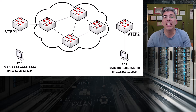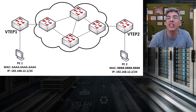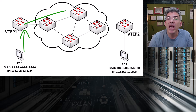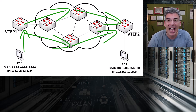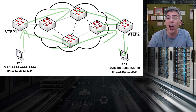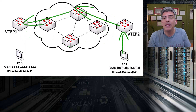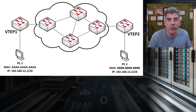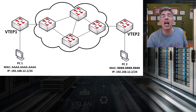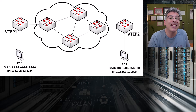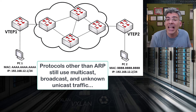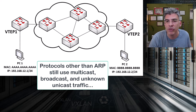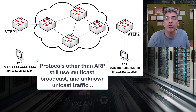An MPBGP EVPN control plane is essentially used to minimize the use of the flood and learn technique to find the MAC addresses of hosts. This, of course, involves the ARP protocol. The MPBGP EVPN solution helps to make the use of ARP on the VXLAN topology much more efficient, making the whole topology more efficient as well. But even so, there are mechanisms other than ARP that operate on the network that still use multicast as well as broadcast and unknown unicast traffic, and we must provision for such traffic to be able to traverse the VXLAN topology.